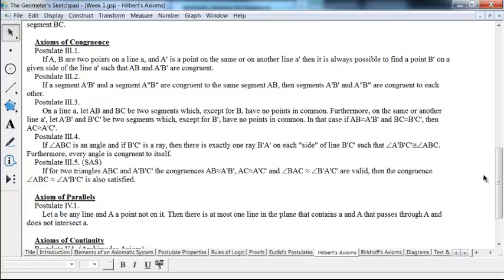Postulates in group 3 have to do with congruence. Postulates 3.1 is if A and B are two points on a line, lowercase a, and A prime is a point on the same or another line, then A prime, then it's always possible to find a point B prime on a given side of the line A prime, such that AB and A prime B prime are congruent, those two segments are congruent, and so forth. So we have a list of these things that have to do with different congruent things that we can make, including the side-angle-side postulate on 3.5. Now, if we just take the postulates up to that point, those will be postulates for what we're going to call neutral geometry, which includes hyperbolic geometry and Euclidean geometry as well.